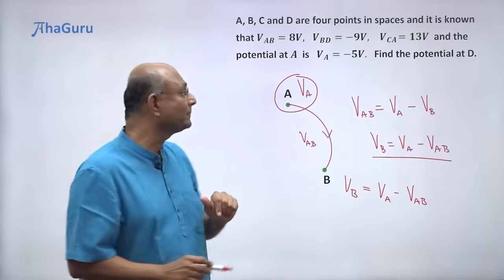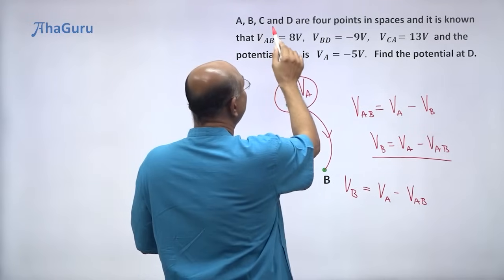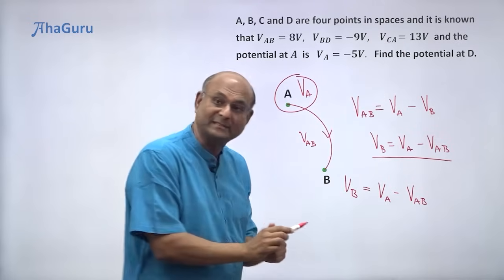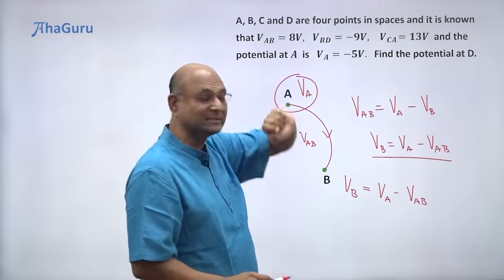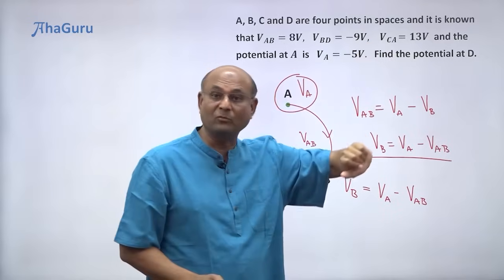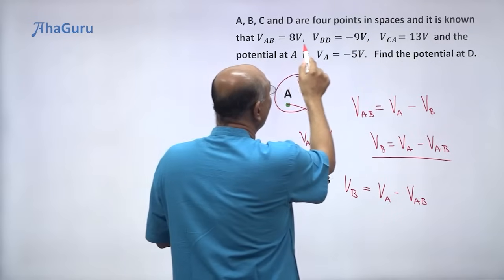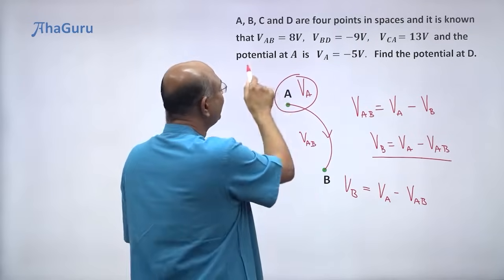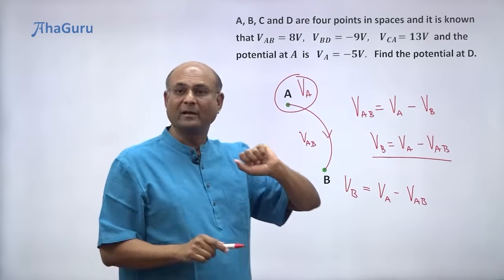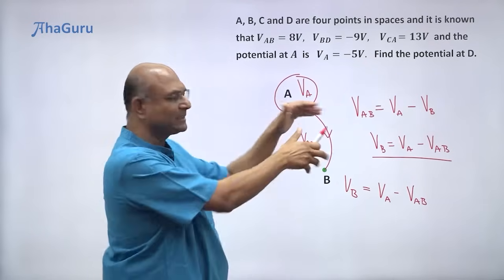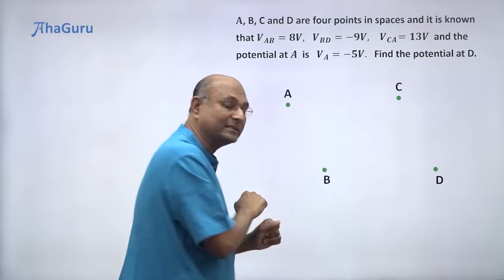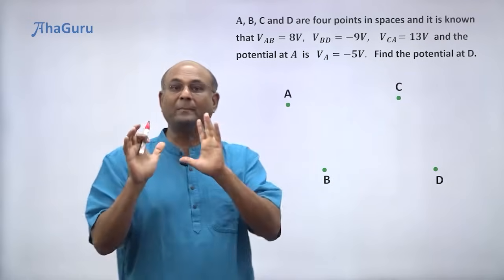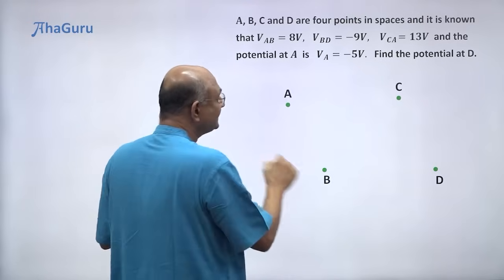Let us now look at this question. A, B, C and D are four points in space and it is known that V_AB is 8 volts, V_BD is minus 9 volts, V_CA is 13 volts. So what is given are all the potential drops. Potential at A is also given and we want to find the potential at D. Let us clear up this space and always draw the points, always draw a diagram that will help you solve the problem.